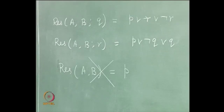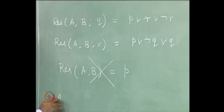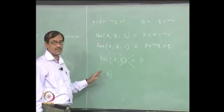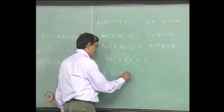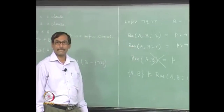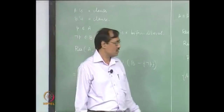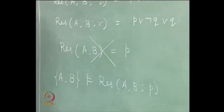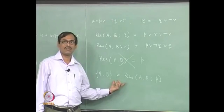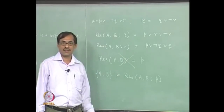Let us see the reason why we are doing it. The reason is: if you take A and B as a set of two propositions, they will really entail the resolution of A and B with respect to whatever literal you have chosen. This entailment is really semantic entailment. It says: choose proposition A and proposition B. If you assume A and B, you can deduce the resolution of A and B — this consequence is a valid consequence.